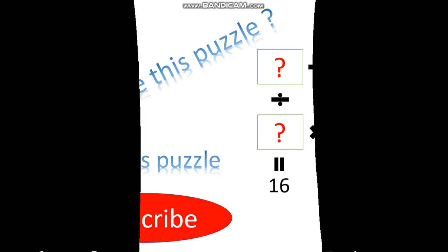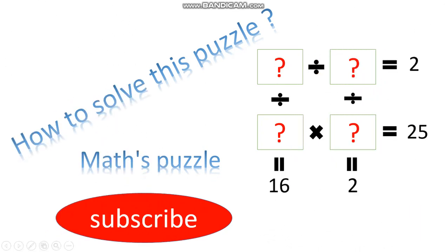Hi friends, today we are going to solve the puzzle. We have a grid with division and multiplication rules: if we divide in one direction we should get 2, if we divide in another direction we should get 16, if we divide in another direction we should get 2, and if we multiply in this direction we should get 25. Please subscribe to my channel for future updates.